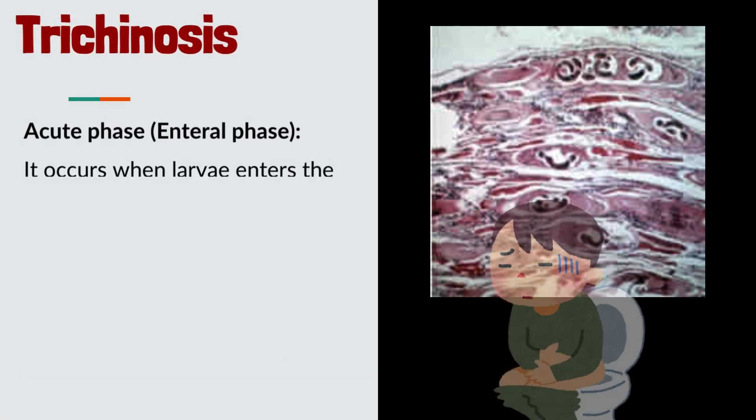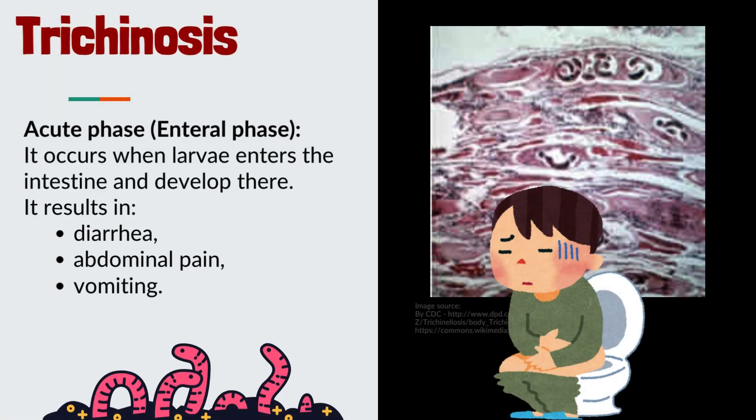Acute phase of trichinosis, also known as the enteral phase: it occurs when larvae enter the intestine and develop there. It results in diarrhea, abdominal pain, and vomiting.